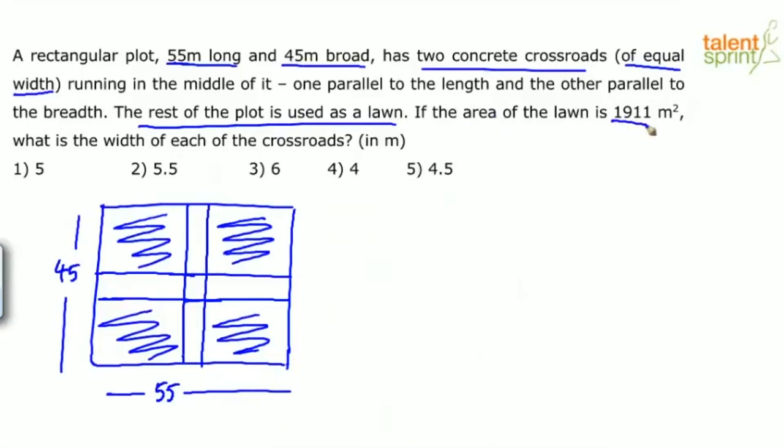Now the area of the lawn is 1911 square meters. What is the width of each of the crossroads? So basically we have to find out the width of each of the crossroads.